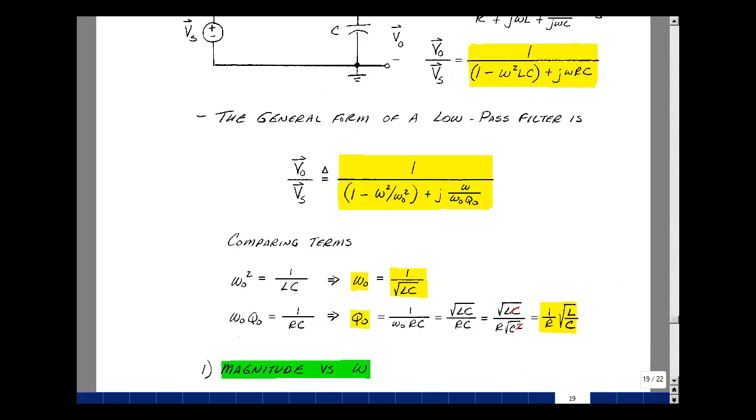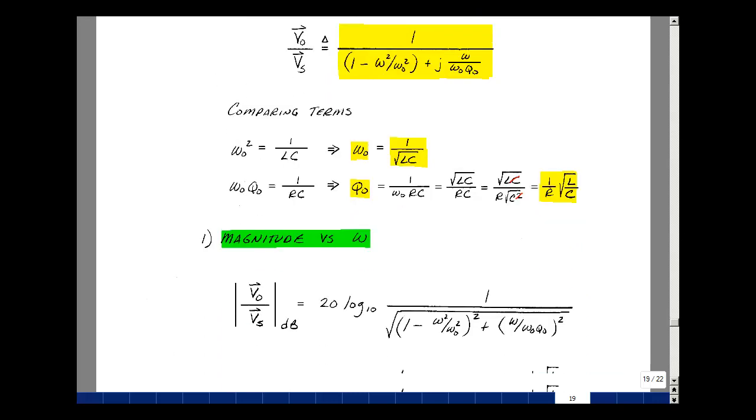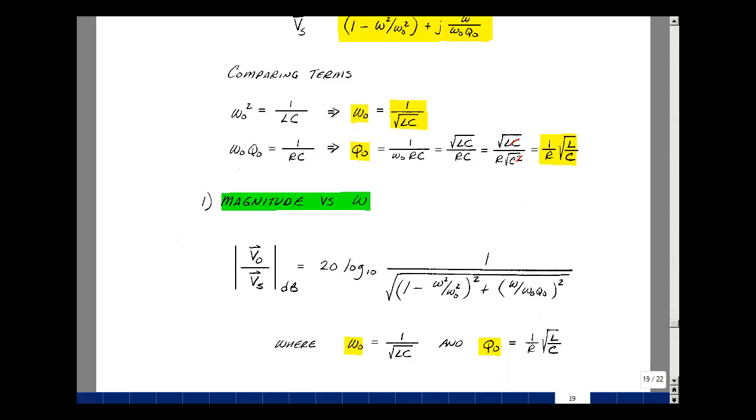We can look at plotting the magnitude of this. We'll take 20 log of the magnitude of the numerator, just one, over the denominator, the real part squared plus the imagined part squared. This particular case, omega naught is equal to one over the square root of LC. And Q naught is one over R square root of L over C. There are many circuits that make this function. And the value of omega naught and Q naught would then be different. Let's take a look at graphing this.